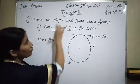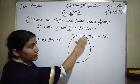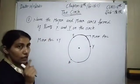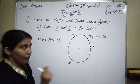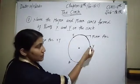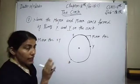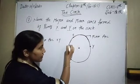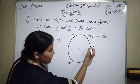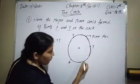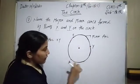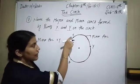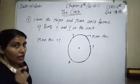Now we have to find out the major arc. The shortest distance is the minor, and for the major we have to see the longest distance between two points on the circumference. Here are the two points X and Y on the circumference, so the longest distance from X to Y is called the major arc. Here point A lies on it, so XAY is our major arc.